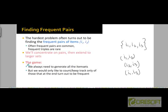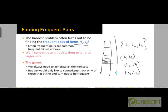The general approach is that we are going to consider all pairs of items, generating all item pairs. As we parse the transaction file for each basket, we look at all the items and generate all possible pairs. In the first pass, we will only be keeping track of singleton sets and which items individually are frequent.